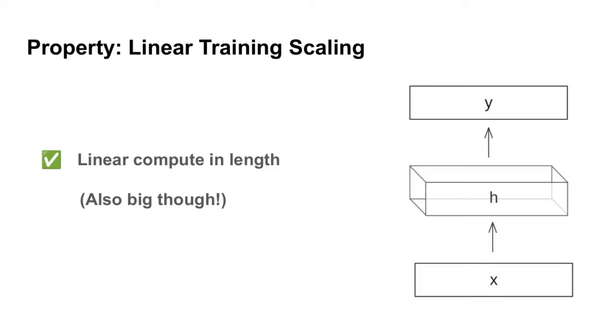The second key property is the use of linear compute. Again, this doesn't mean that the compute is small. We're going to be using a lot of compute. It's just that it's not going to scale quadratically with the length of the sequence during training.